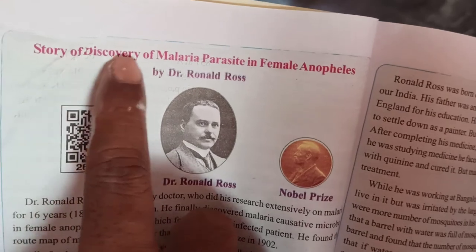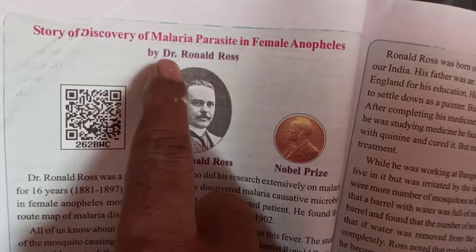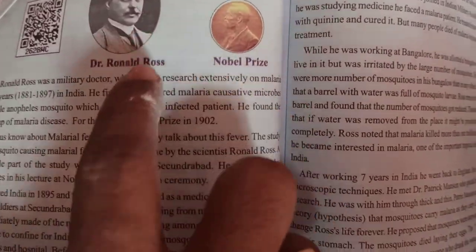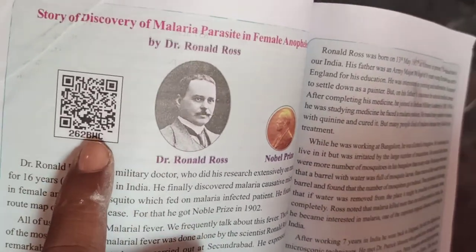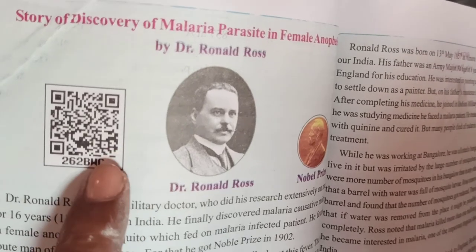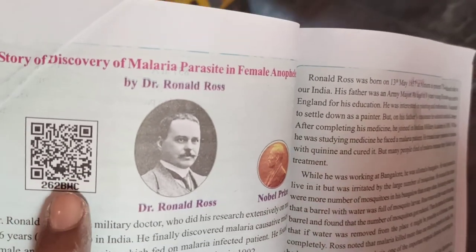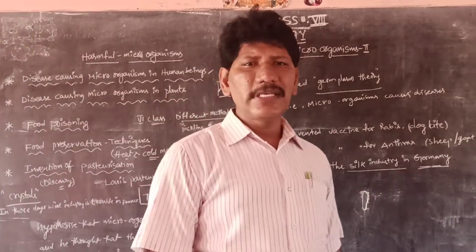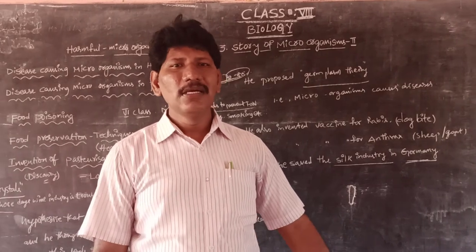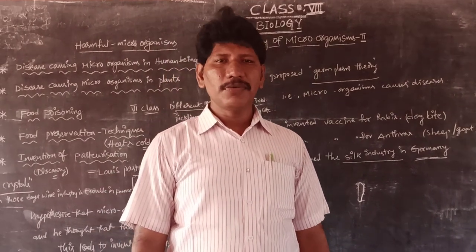The last story is the discovery of malaria parasite transmission by female Anopheles mosquito by Dr. Ronald Ross. In the next video, we will discuss the detailed information about Ronald Ross and the Diksha app QR code will also be uploaded. For Part 2, we have four stories: penicillin story, smallpox story, pasteurization, and anopheles mosquito. Thank you children, thank you very much.